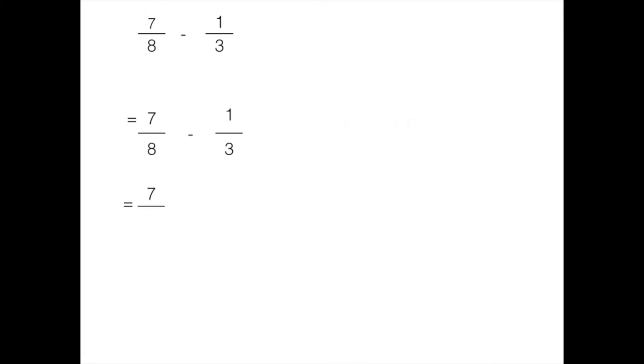We realize thirds can be cut into twenty fourths and so can eighths. If we multiply one third by an equivalent form of one expressed eight over eight, we get eight twenty fourths.